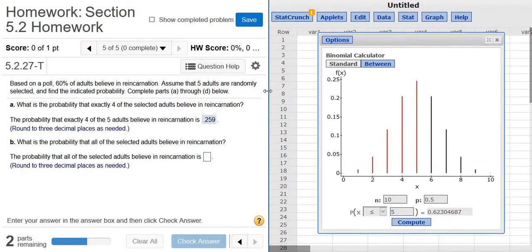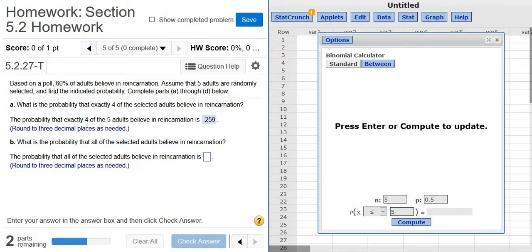n is the number of trials. There's 5 adults, so there's 5 trials. p is the probability of success. Success is believing in reincarnation, and the reason is we care about people believing in reincarnation in this problem. It says, what is the probability that exactly 4? So success is believing in reincarnation.